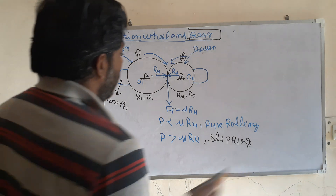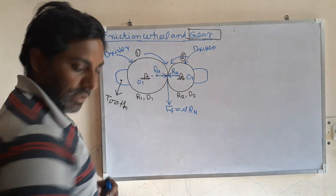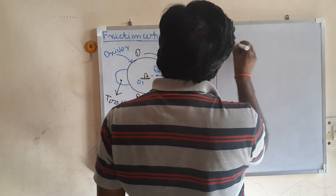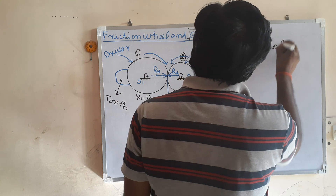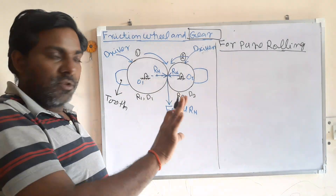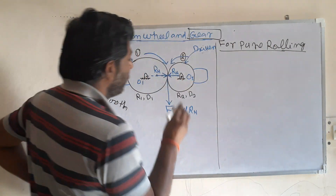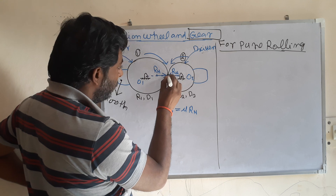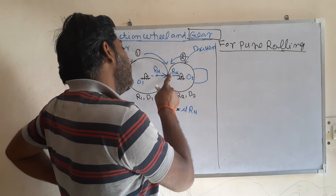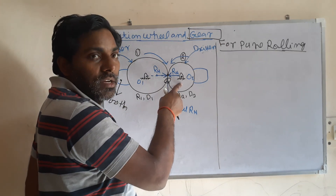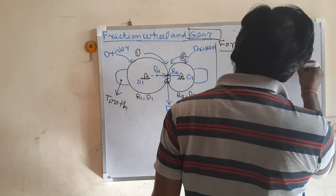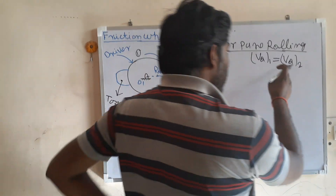Now let us derive some kinematic relations. For pure rolling — and for gears there is no slipping, so this is applicable — let this be the point of contact, call it point Q. This point Q lies on both gear 1 and gear 2. So the velocity of point Q will be the same whether we consider it on gear 1 or on gear 2.